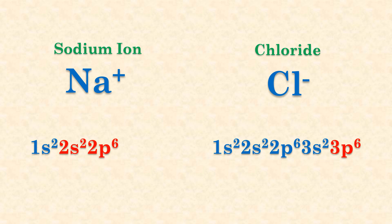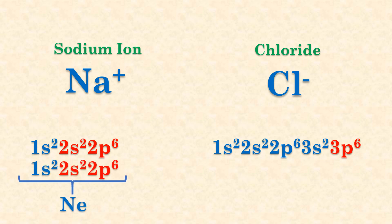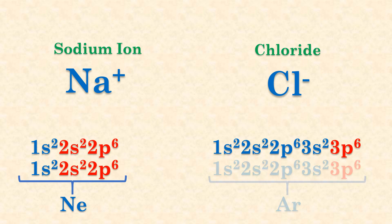Notice how sodium now has a full octet in its new valence shell and is isoelectronic with neon. Chloride also has its valence shell full and is isoelectronic with argon.